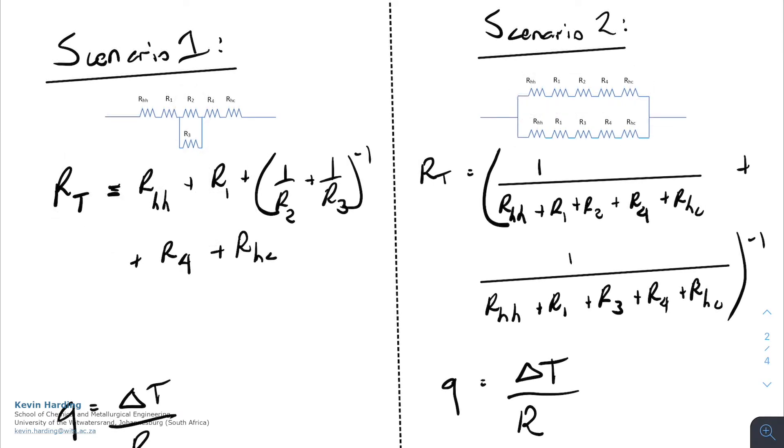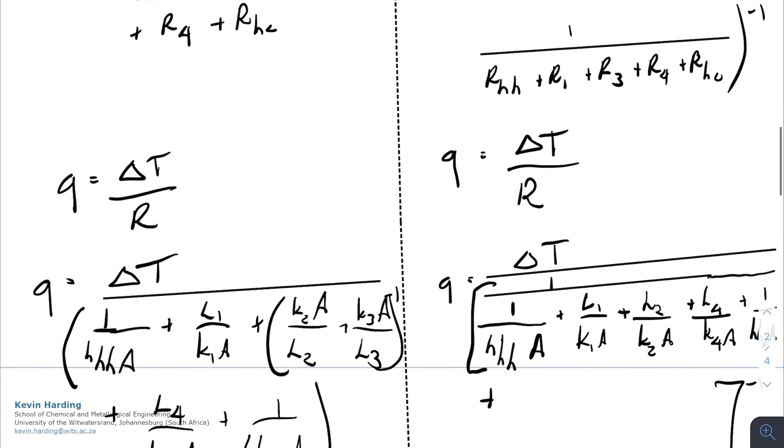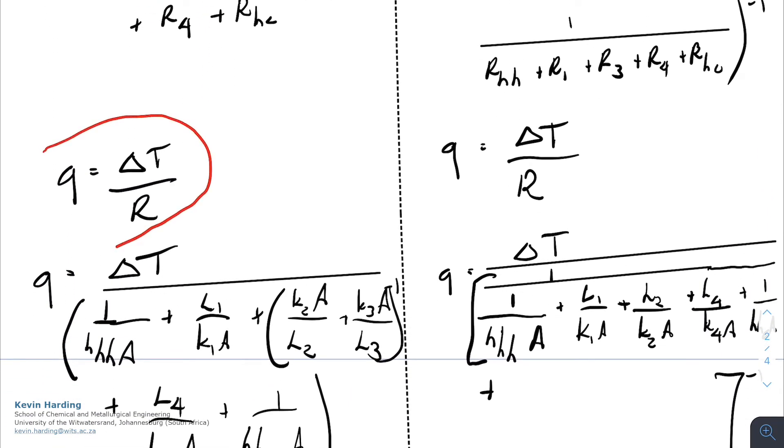If we write this all out in full now and we start on the left hand side, we can see that the total resistance is equal to the series section of the convective plus R1 plus, as we said, the parallel section, which we're going to have to invert, add and invert again.